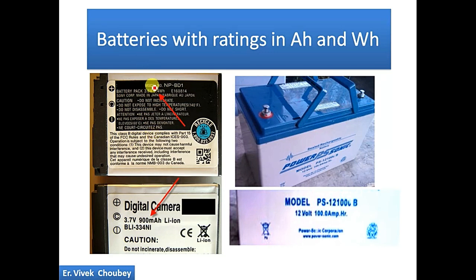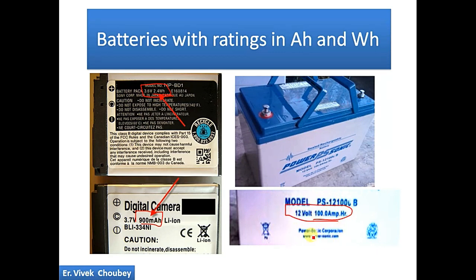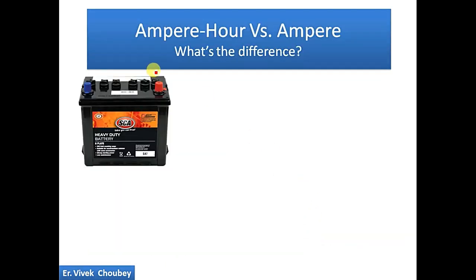You have seen batteries like this — this is a mobile battery. You have seen ratings like 2.4 watt-hour. Here is a 900 milliampere-hour digital camera battery. Similarly, we have bigger batteries rated as 100 ampere-hour, where it is written '100 ampere-hour, 12 volt.' So what does this ampere-hour mean?